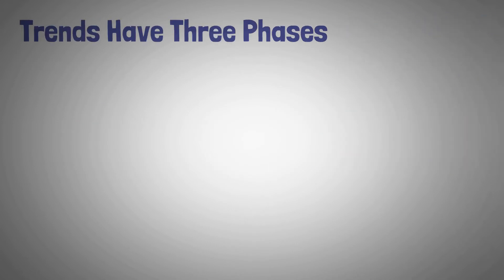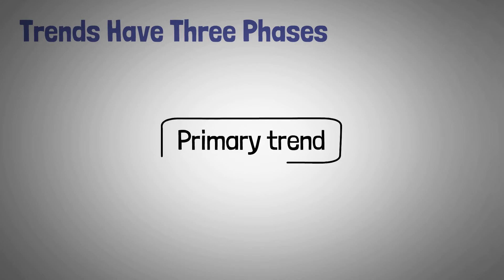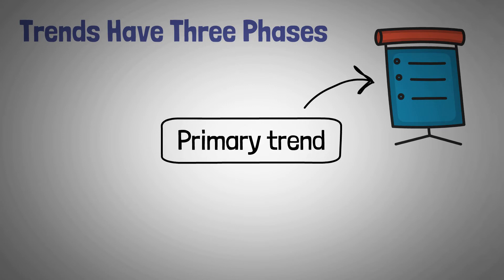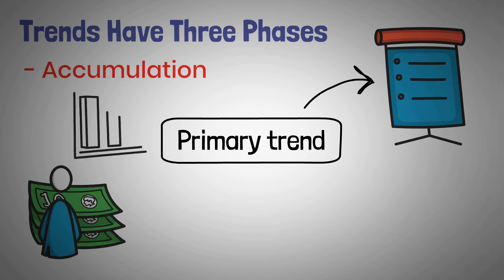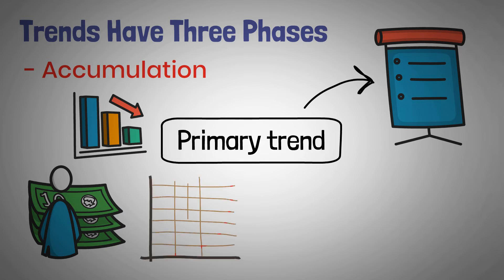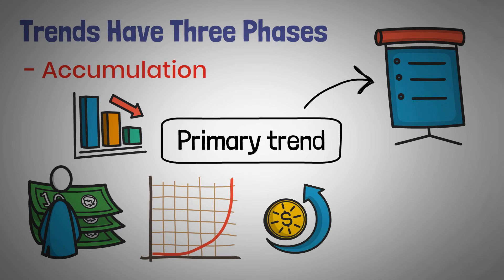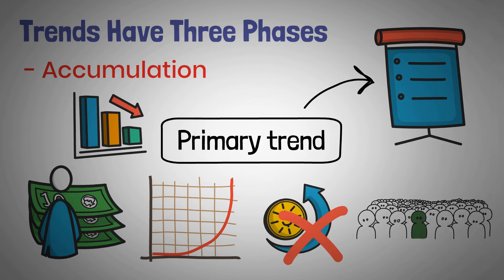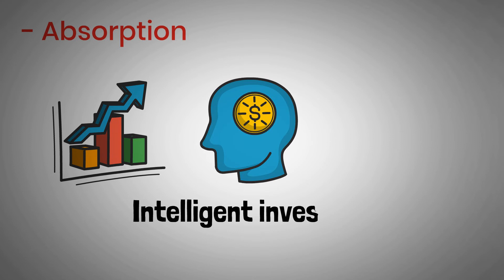The second tenet of Dow theory takes the primary trend under consideration and states that there are three phases in it. The first phase is accumulation, where investors start buying assets towards the tail end of the downward trend, in anticipation of creating a new upward trend. The price doesn't change much during this phase because these insiders are in the minority. The second phase is absorption, when the upward trend accelerates and the market catches on to these intelligent investors.